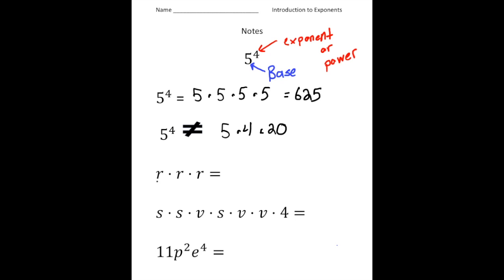So let's fill in these. R times R times R — we can write that with a base of R and then an exponent of 3. This next expression we have S times S times U times S times U times 4. So that's going to be S to the 3rd power times U to the 4th. Now this expression I'm going to expand: we have 11p² times E to the 4th, so we can write this as 11 times P times P times E times E times E times E.